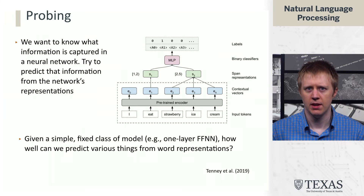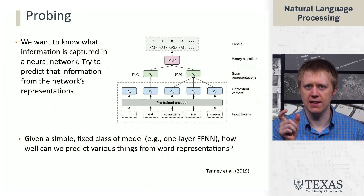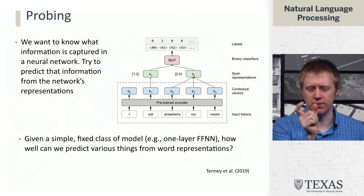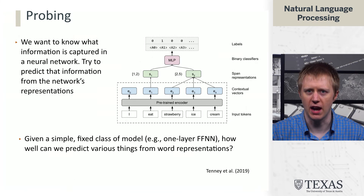In this segment, we're going to talk about model probing. Probing is a different form of explanation than we've been looking at — it's more a way of analyzing the kinds of representations that our models are using, which gives us some idea of why predictions are arising, but it's a little bit less explicit than some of the other techniques. Essentially, our goal is to figure out what kinds of information are being preserved in a neural network, by taking intermediate representations and trying to predict that information out of those.